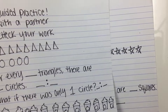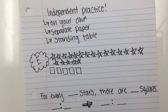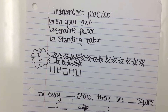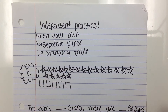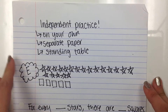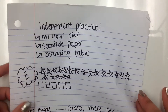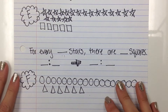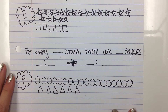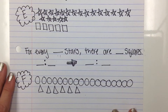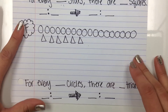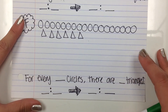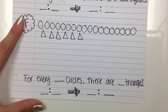Your independent practice — on your own, on a separate sheet of paper. Stand at your table when you're done. You have two problems: E and F. Thanks for an awesome screencast.